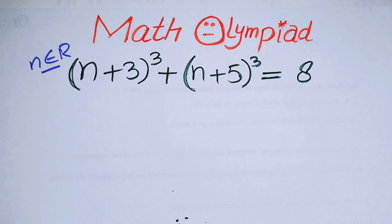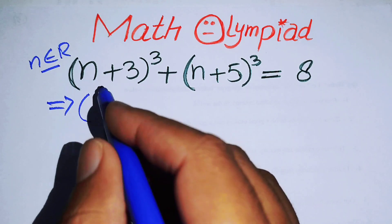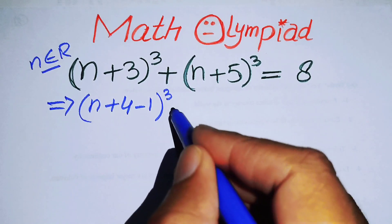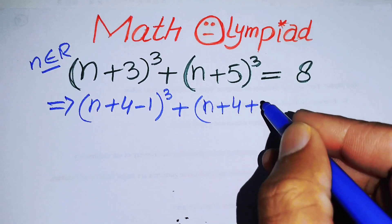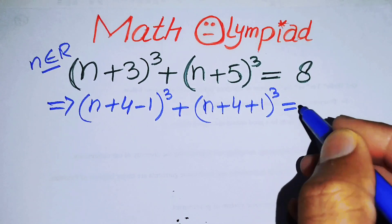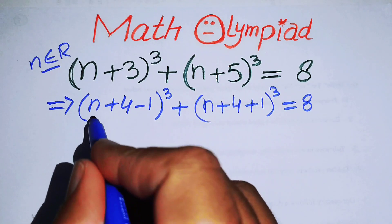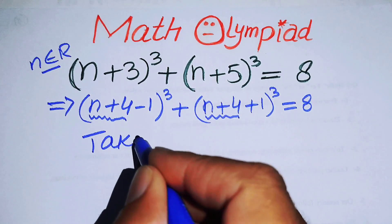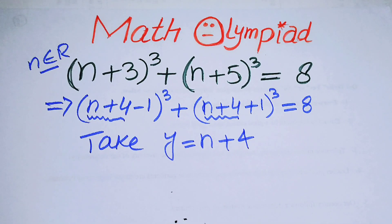The very first thing we are going to do is rewrite this equation. We write (n+3) as (n+4−1), and we write the second term as (n+4+1). So the equation becomes (n+4−1)³ + (n+4+1)³ = 8. We can simplify this by letting y = n+4.